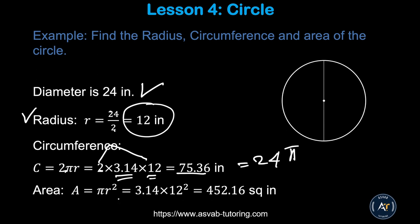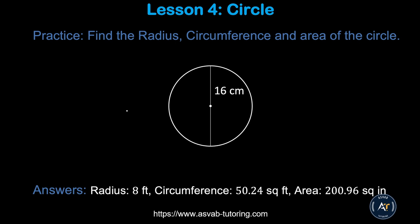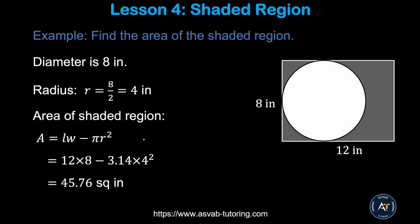The area = π × r² = 3.14 × 144 = 452.16, or equivalently 144π. Pause the video and try the practice problem. Make sure you get radius = 8, circumference = 50.24, and area = 200.96 square inches.